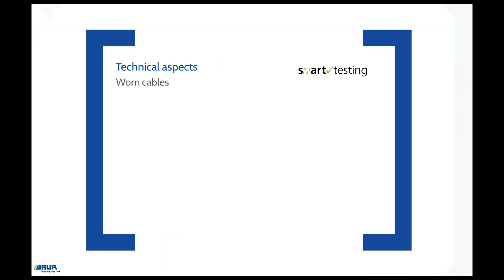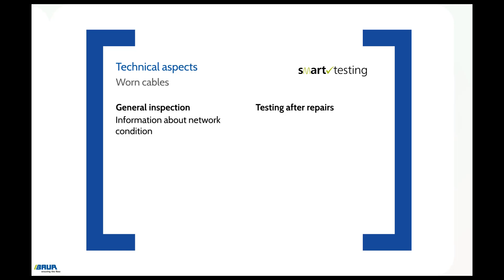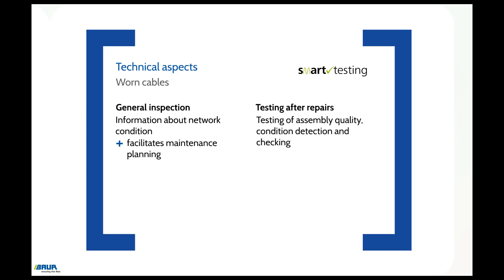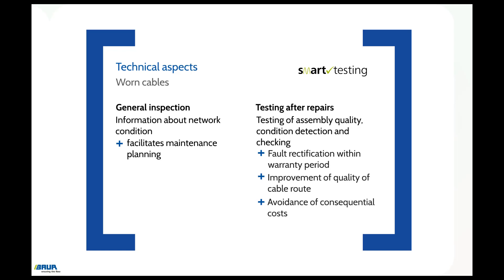During cable testing on worn cables, a distinction is made between a general condition evaluation of critical cables and the inspection of cables after repairs. The general inspection supplies information about the condition of the network status, which facilitates maintenance planning. Testing after repairs has two purposes: firstly, to check the assembly quality, and secondly, for condition detection and to check whether the problem has been rectified. This allows claims to be asserted during the warranty period, the quality of the cable route to be improved, and consequential costs to be avoided.